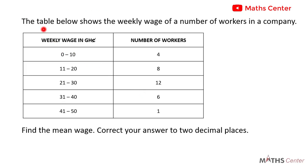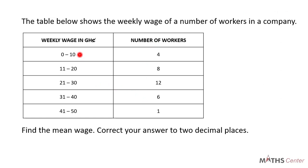Let's consider this question. The table below shows the weekly wage of a number of workers in a company. We have the weekly wages in one column and the number of workers in another column. As we can clearly see, this is a grouped data: 0 to 10, 11 to 20, 21 to 30, 31 to 40, and 41 to 50.